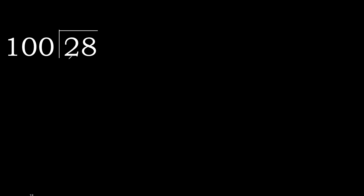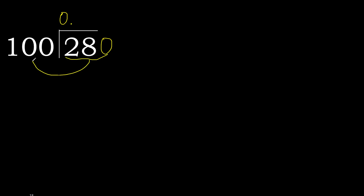28 divided by 100. 2 is less, therefore next. 28 is less, therefore next. That is not a number, therefore complete — always complete with 0 here. 0 point. 280 is not less, therefore continue with 280.